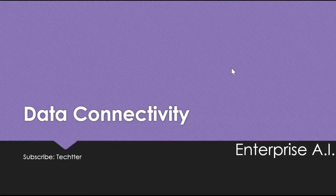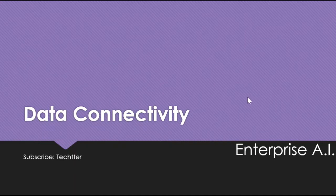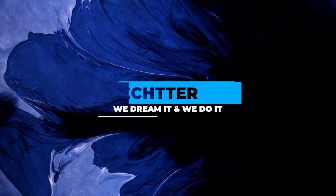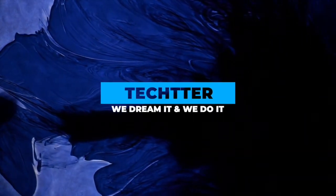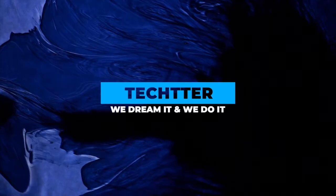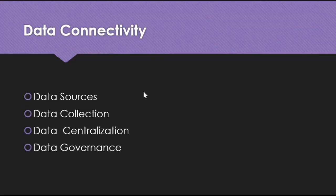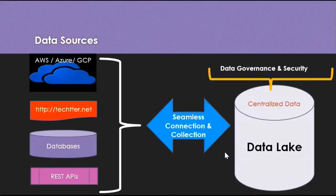Hello friends, welcome back to my channel. This video is the continuation of my series on enterprise AI architecture. As part of this video, I'm going to talk about the data connectivity layer. For data connectivity, we need to follow these four processes: data sources, data collection, data centralization, and data governance.